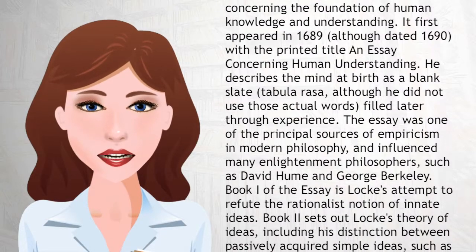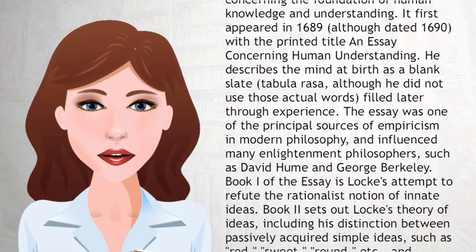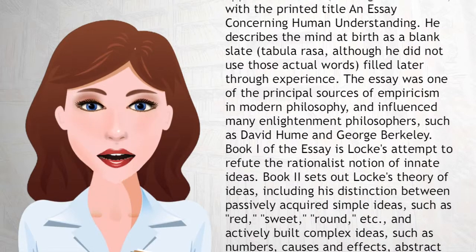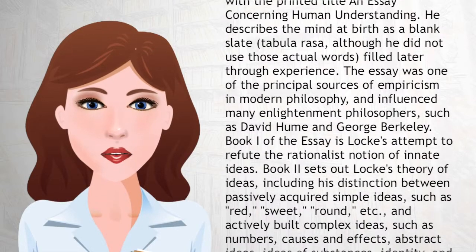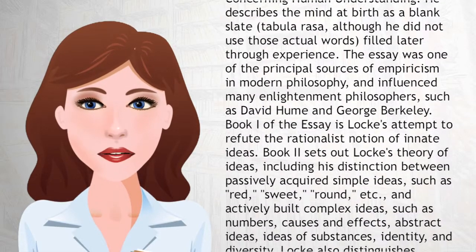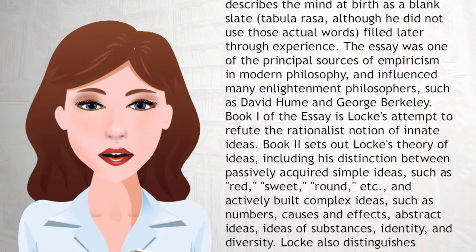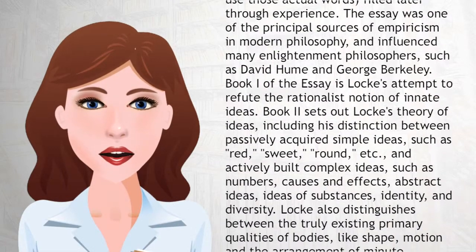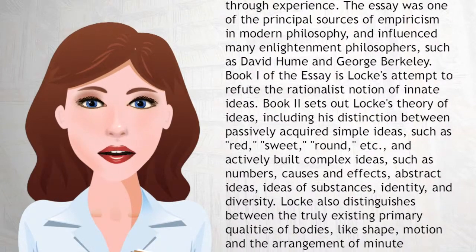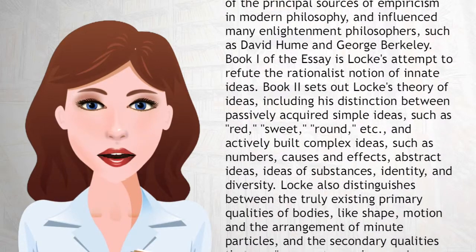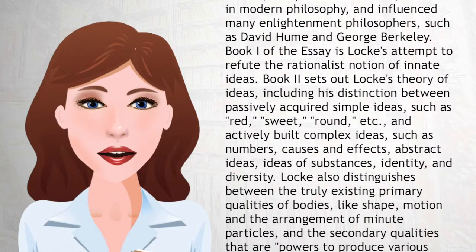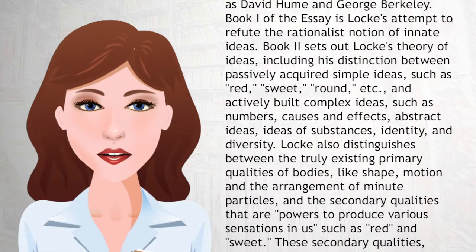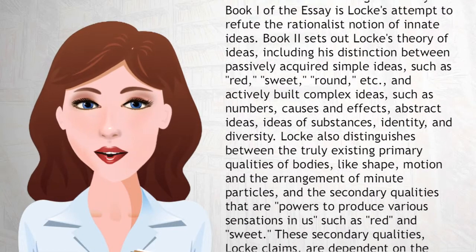Book I of the essay is Locke's attempt to refute the rationalist notion of innate ideas. Book II sets out Locke's theory of ideas, including his distinction between passively acquired simple ideas, such as red, sweet, round, etc., and actively built complex ideas, such as numbers, causes and effects, abstract ideas, ideas of substances, identity, and diversity.